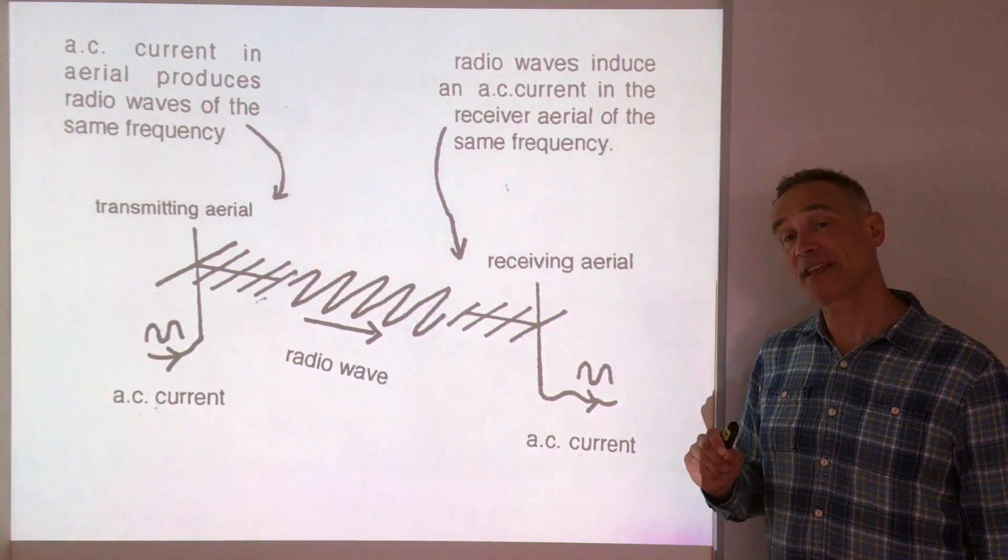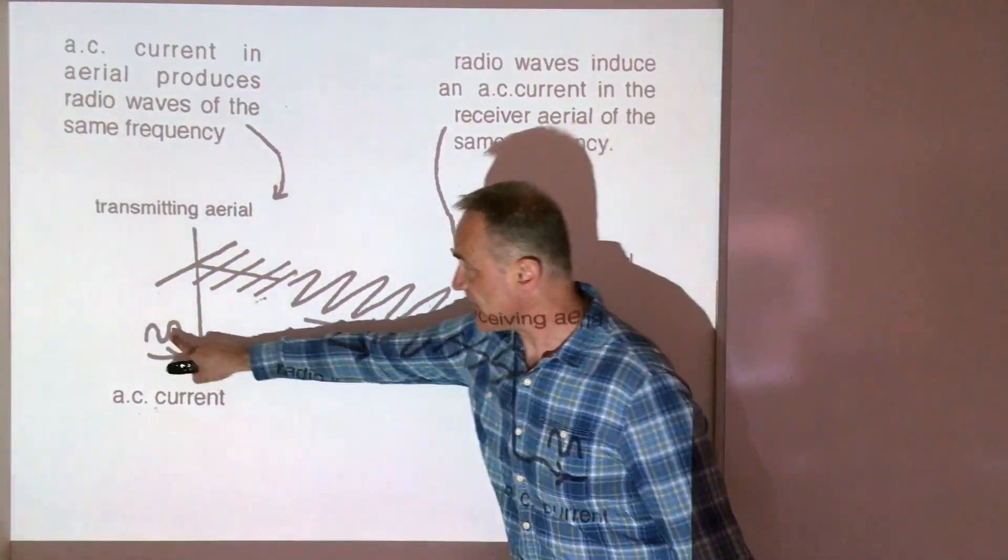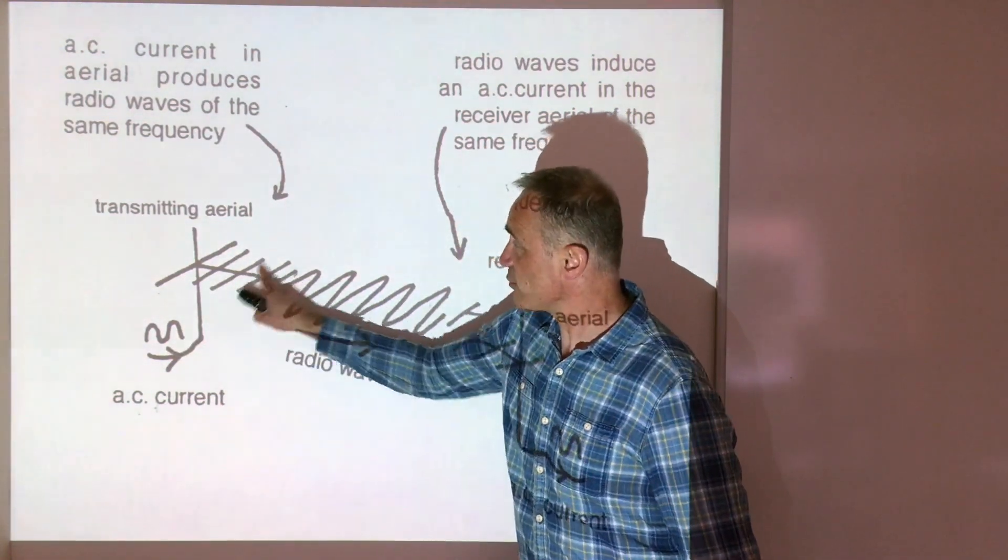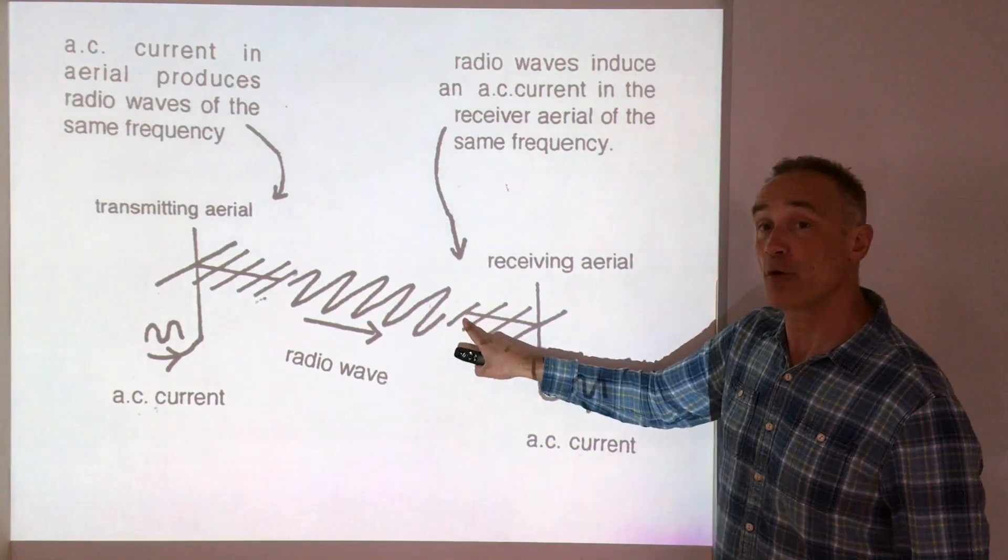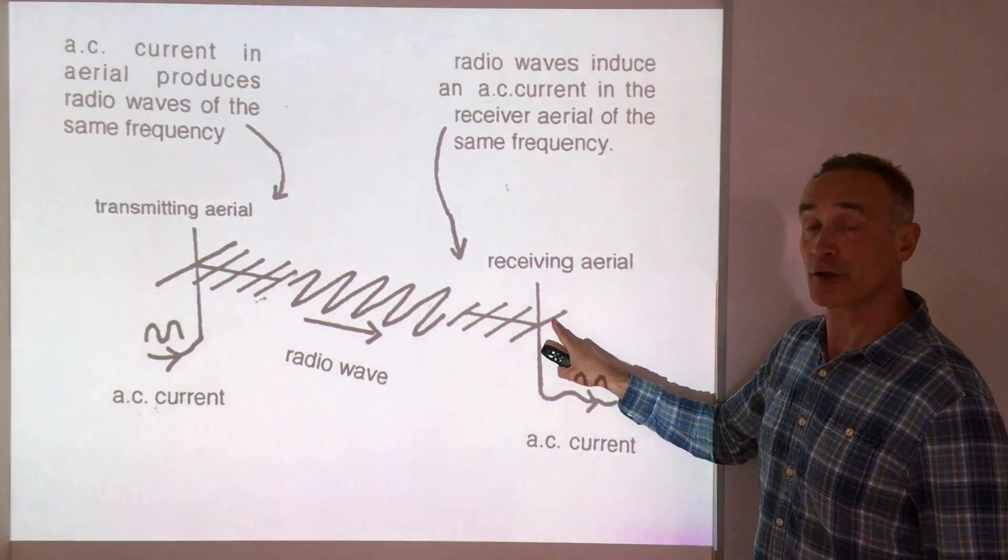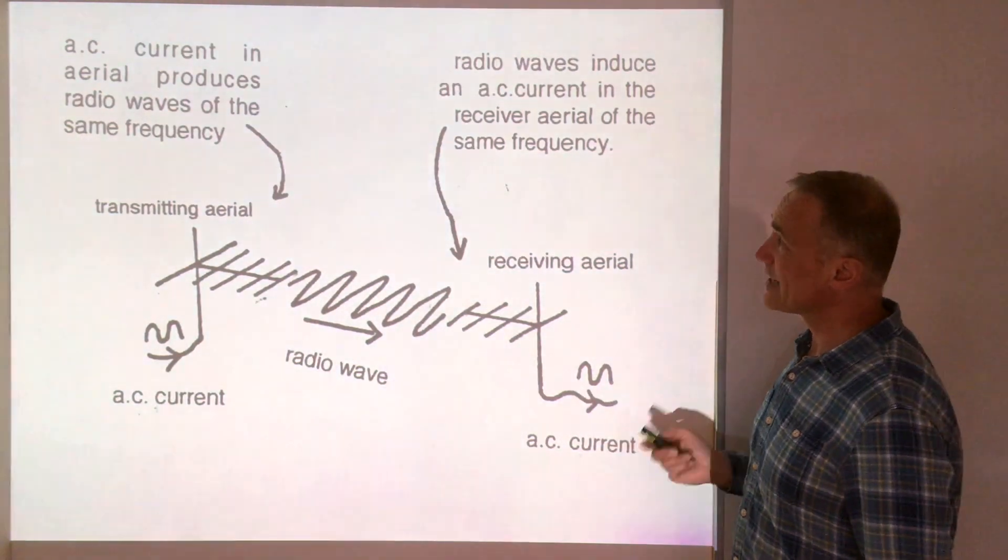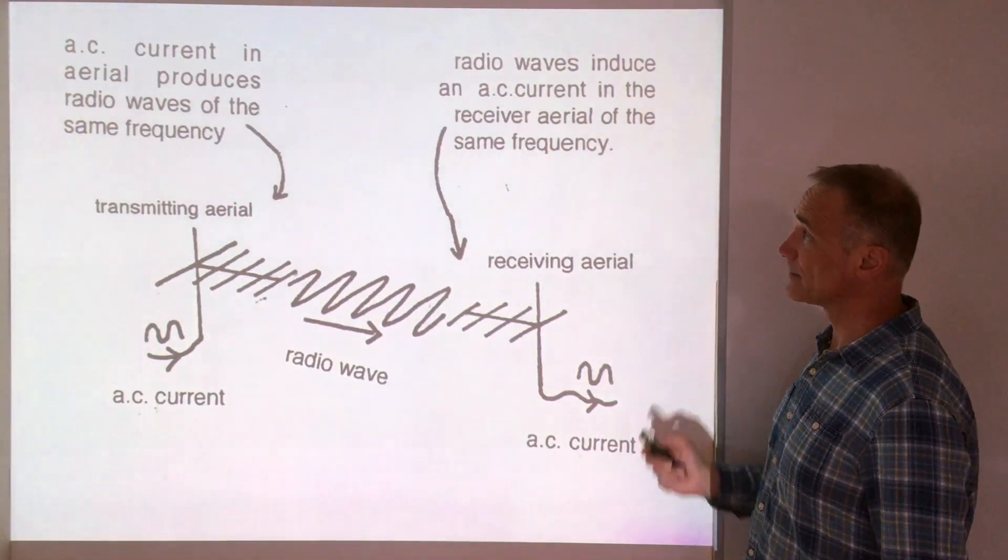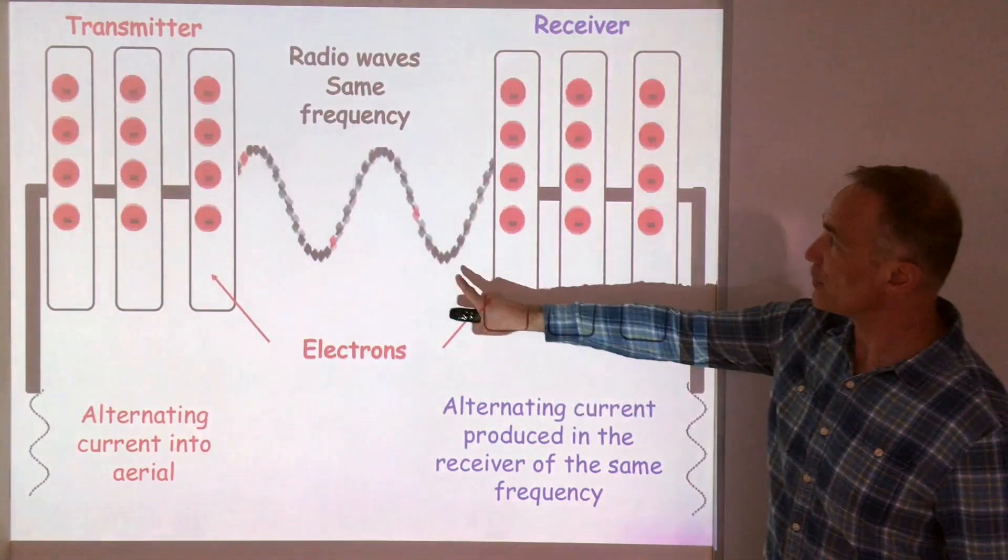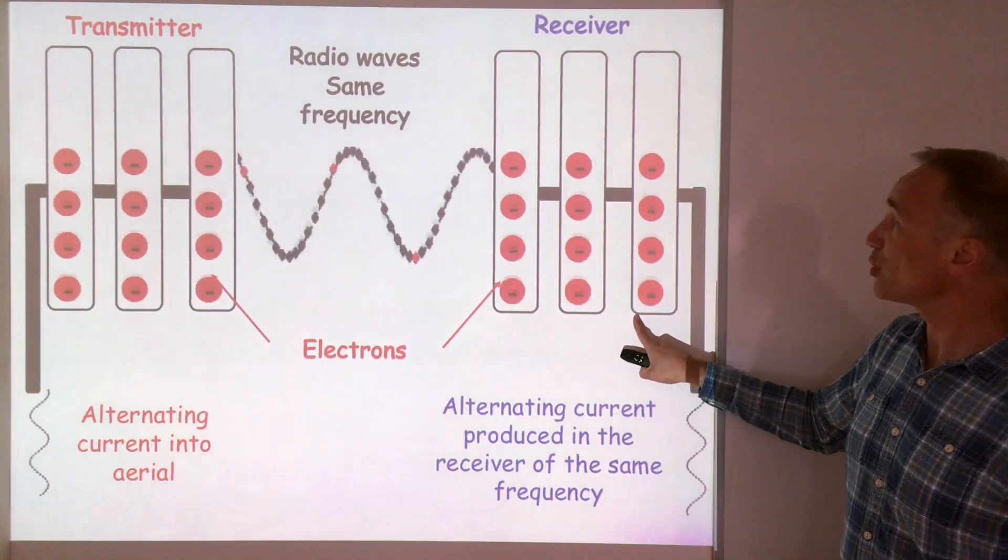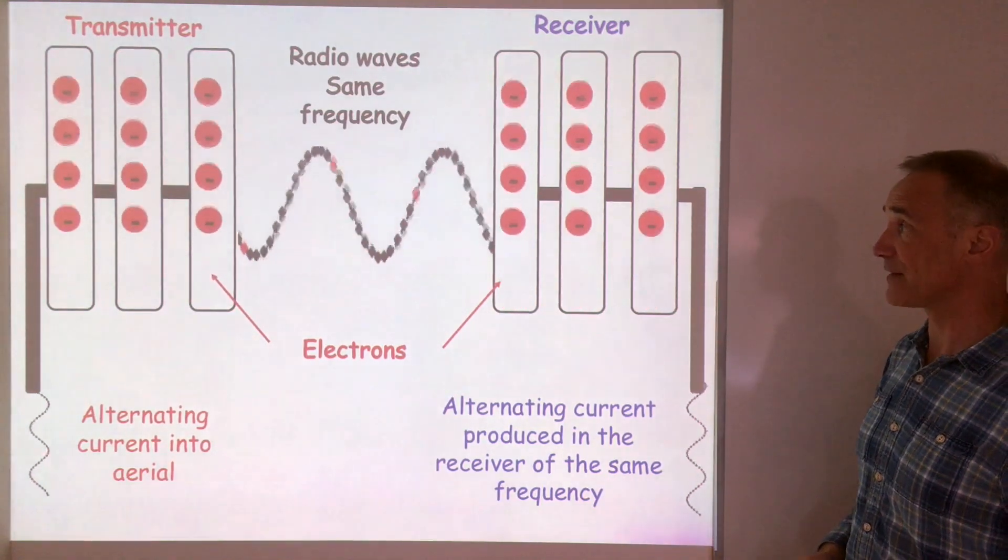One key bit you need to know for the higher paper is how an aerial works. You have a transmitter that has alternating current and that makes electrons vibrate at the same frequency which produces radio waves that then force electrons to vibrate in this aerial, causing an alternating current of the same frequency in the receiver. The alternating current is forcing the electrons to move up and down, producing a radio wave of the same frequency which induce or produce vibrations in the electrons, making an alternating current of the same frequency.